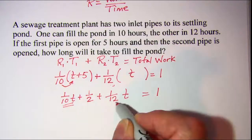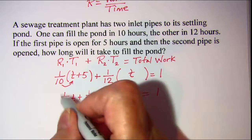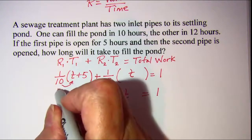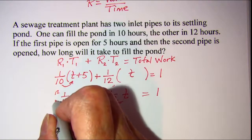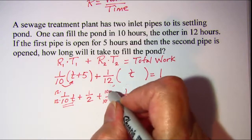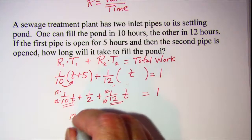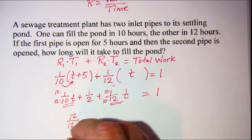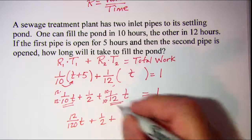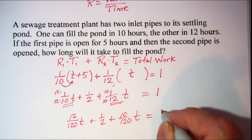If we combine terms here, 1 tenth and 1 twelfth. I'm going to multiply top and bottom here. I'm not going to worry about a least common denominator. I'm going to just get 120. So 12 top and bottom here, and 10 top and bottom here. So I have 12 over 120 plus 1 half plus 10 over 120, and that equals 1.